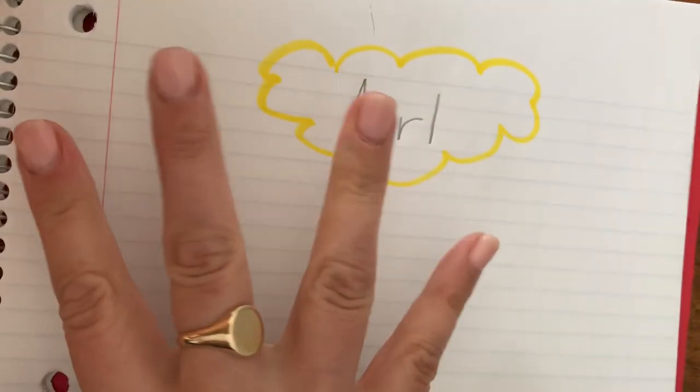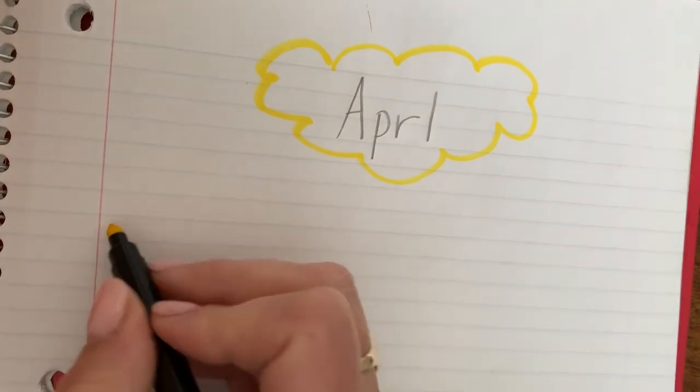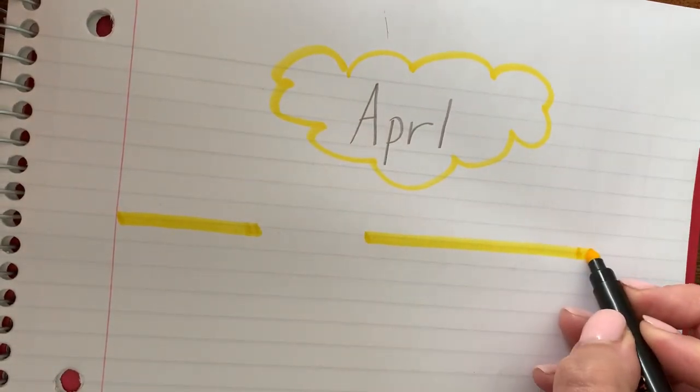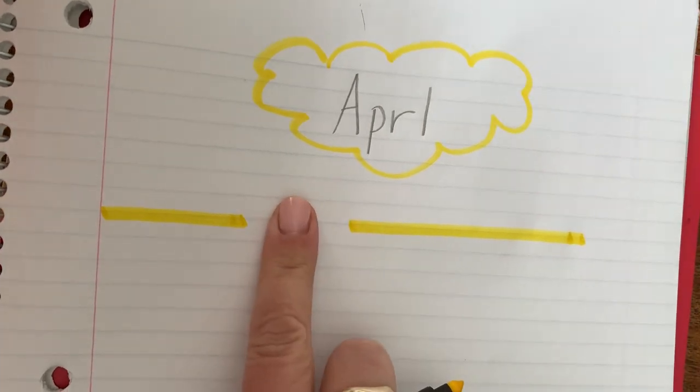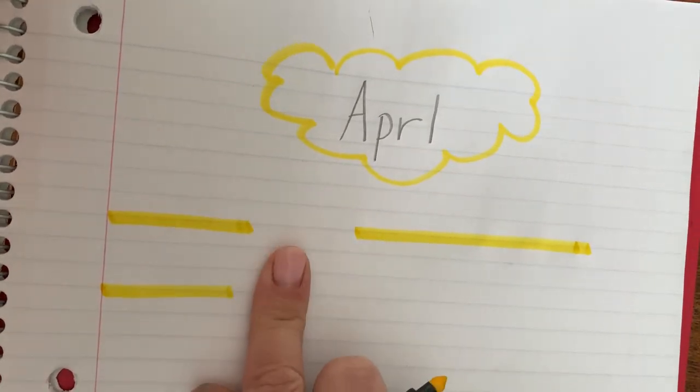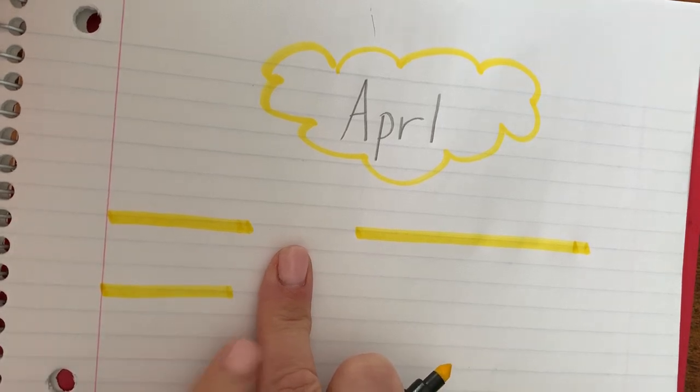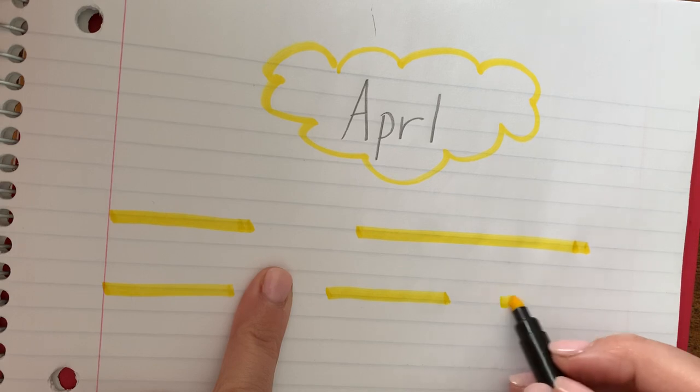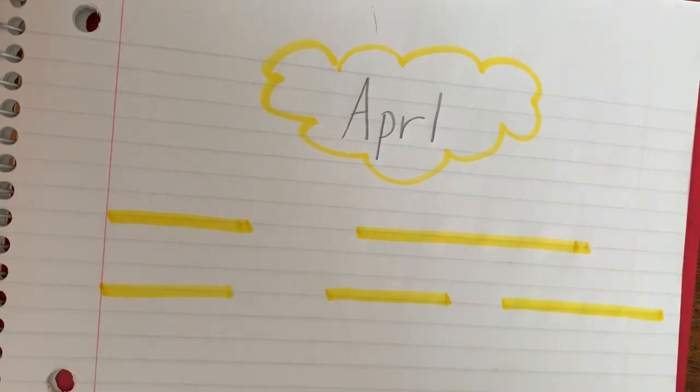And this sentence has four words in it. My birthday, I've made my finger space, is finger space. Oh, five words. In April. Miss Frank made a mistake.